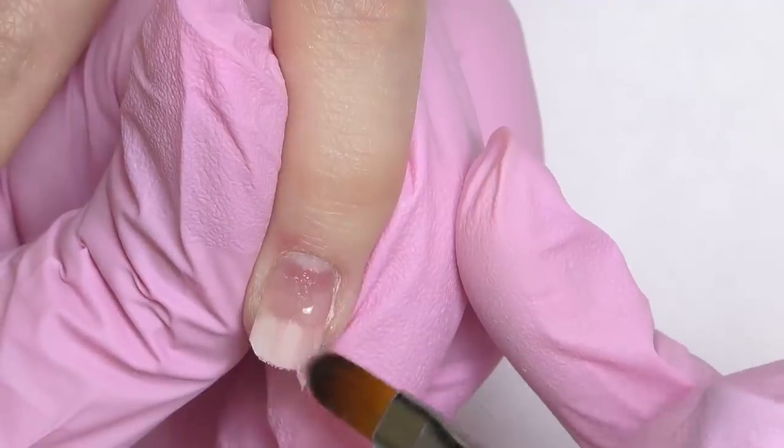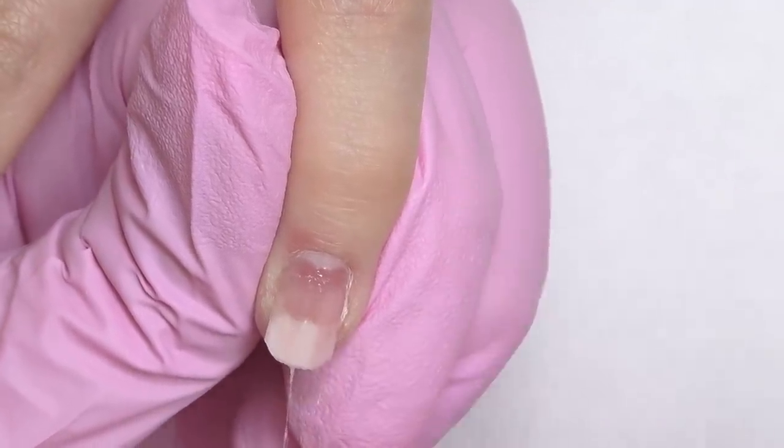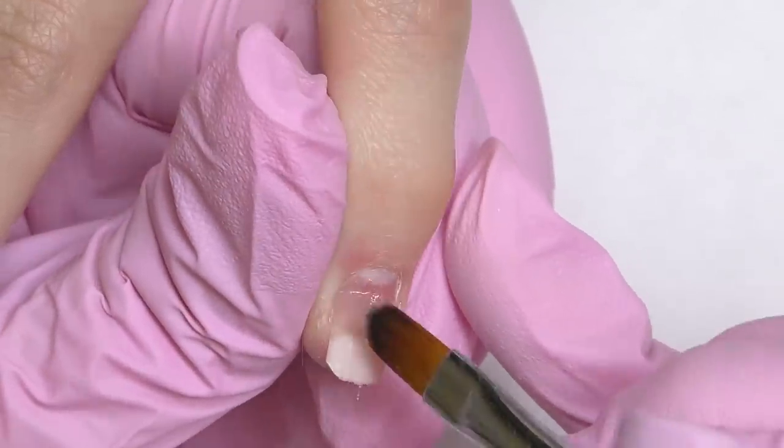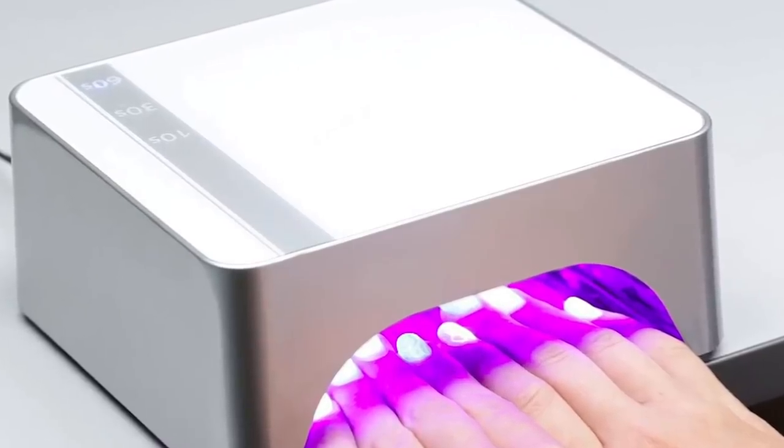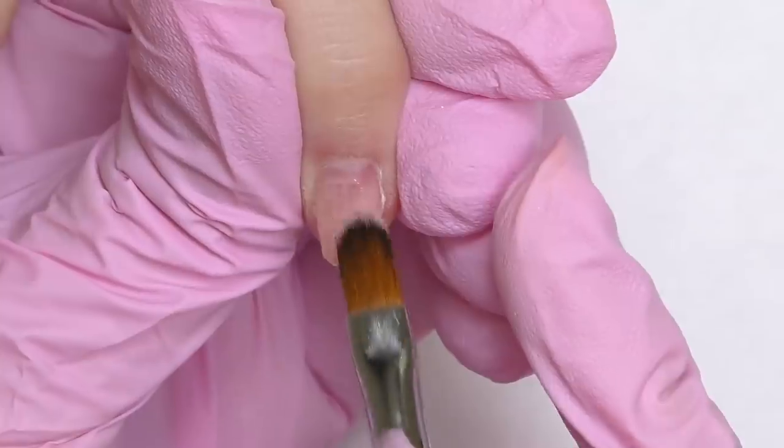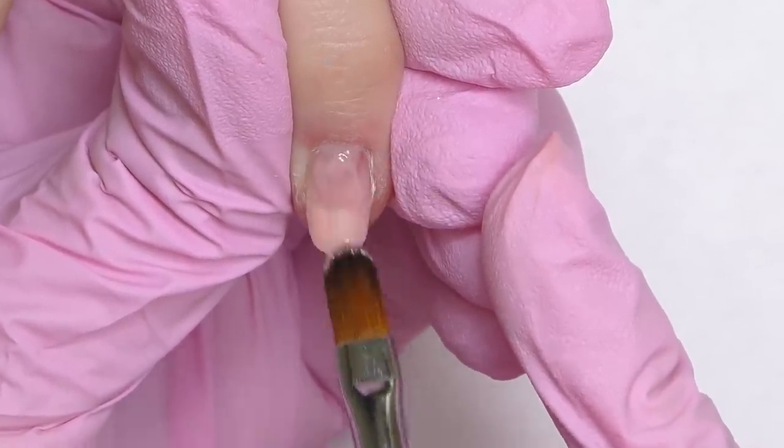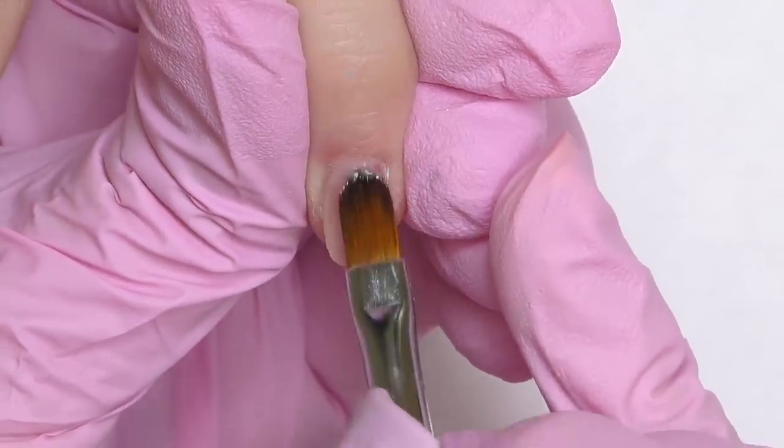So first layer I basically glue this fiberglass together and actually at this point it already kind of looks like a natural nail. Cure in LED for 30 seconds. And then I'm going to apply the next layer and it is time to build a sculpture.